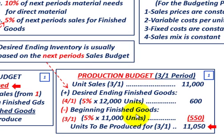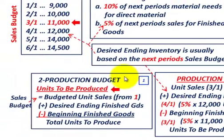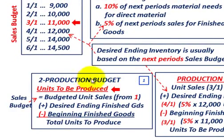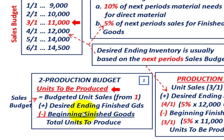To review: the units that have to be produced equals the budgeted unit sales for the period, plus the desired ending finished goods for that period, minus the beginning finished goods — and that gives you the total units you have to produce for the particular period you're looking at. For our production budget, all we're looking for is the units that have to be produced for a particular period.